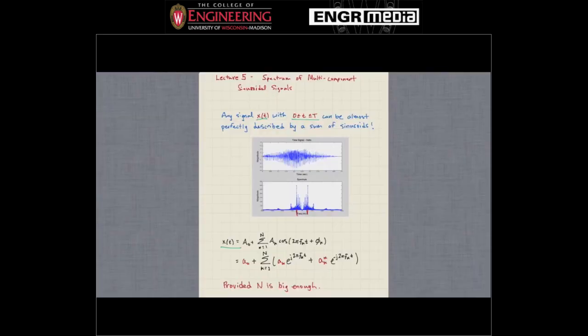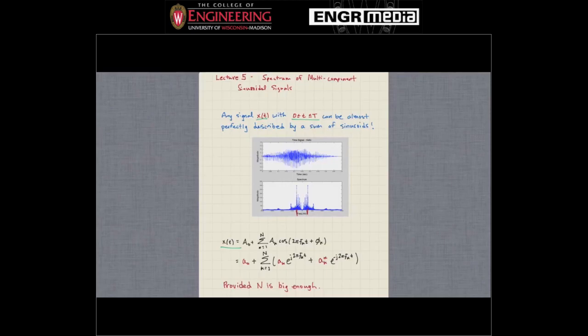We just saw in MATLAB how we can represent an audio signal using a sum of sinusoids. The number of sinusoids that we include in that representation really allows us to control how precisely we replicate the original waveform. If that number N is big, we can almost perfectly describe any signal.